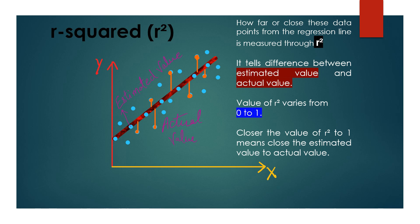Here I need to discuss one more important concept: r-squared. In this scatter plot, all the blue points are actual values, and when we draw a regression line through these points, the points that fall on the regression line are considered estimated values. How far or close these data points are from the regression line is measured through r-squared, where r is the coefficient of correlation and r-squared equals r multiplied by r. It tells the difference between the estimated value and actual value. The value of the coefficient of correlation varies from minus 1 to plus 1, so the value of r-squared varies from 0 to 1.